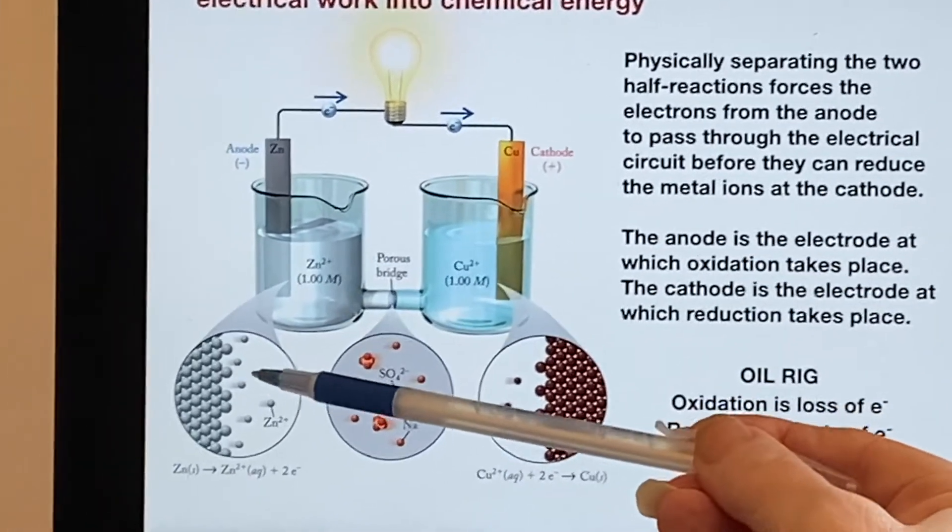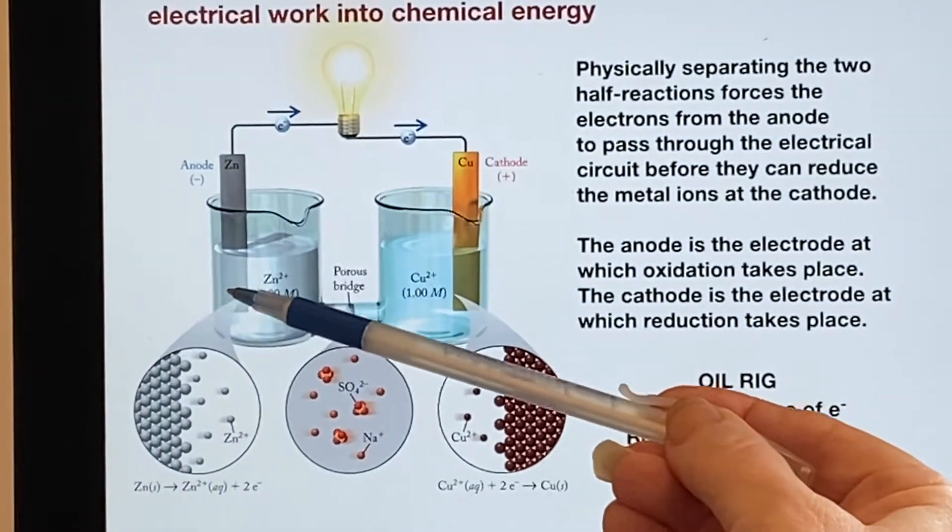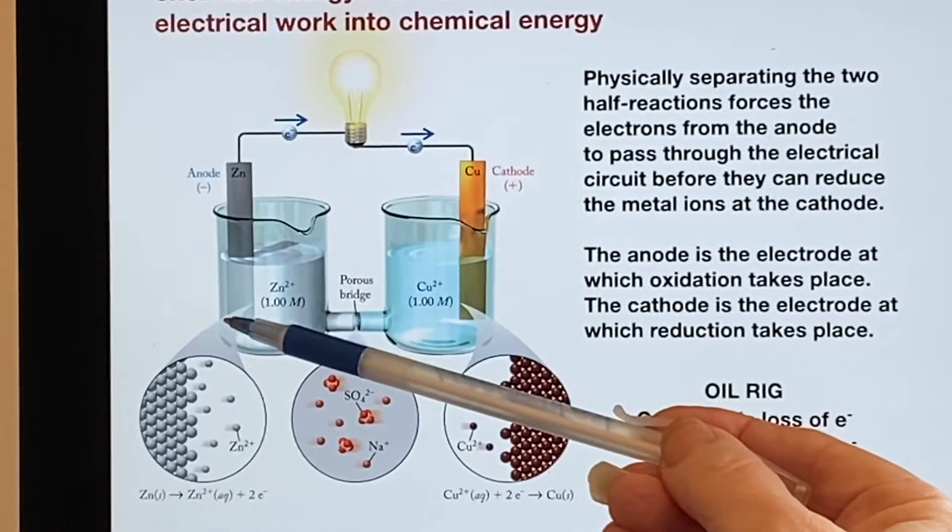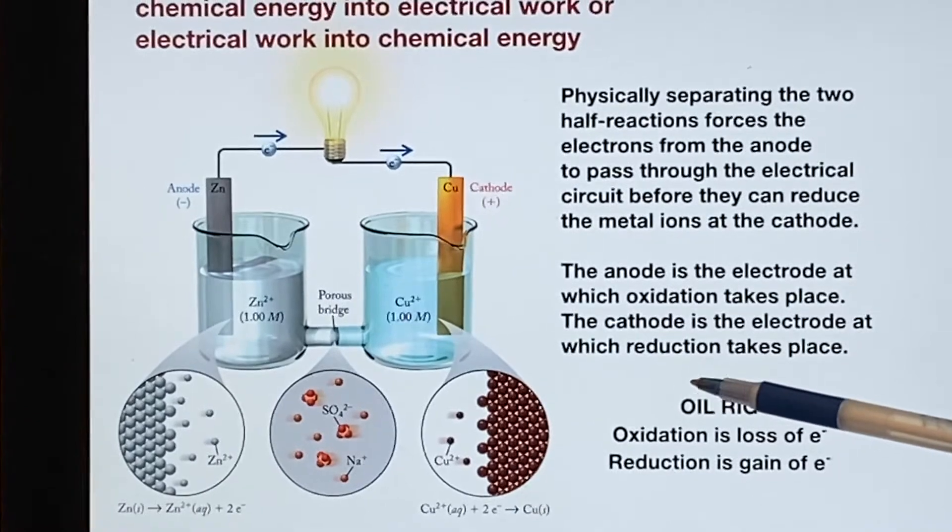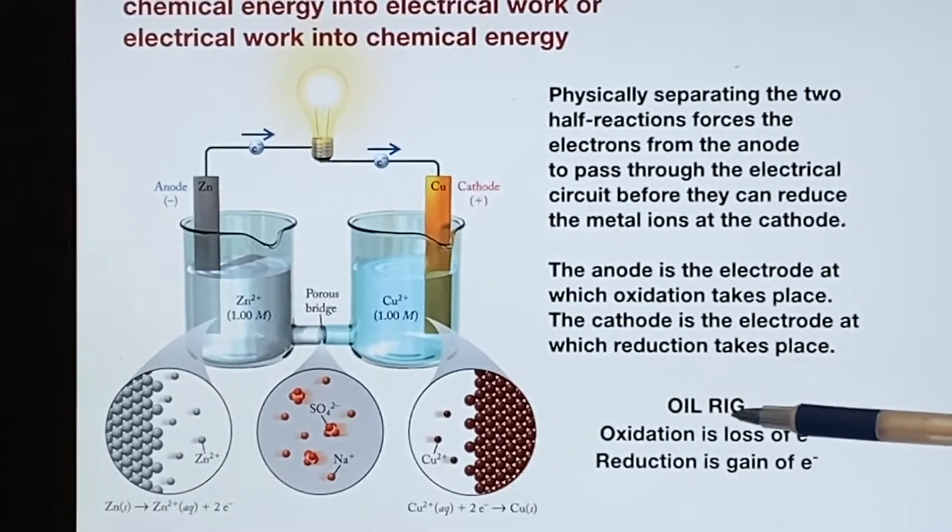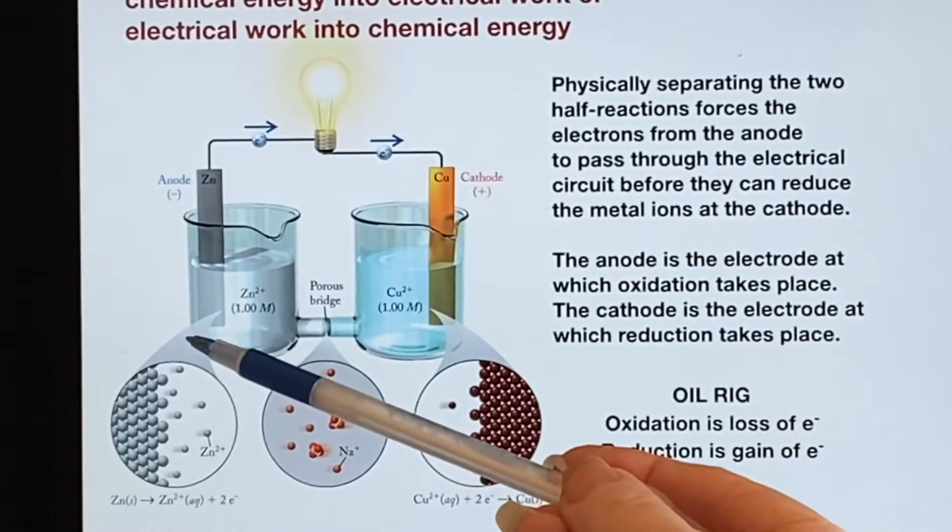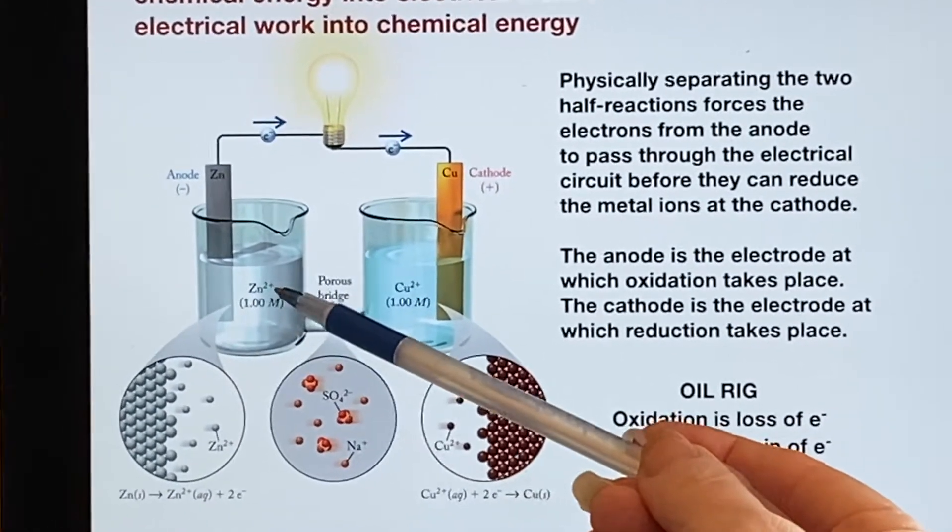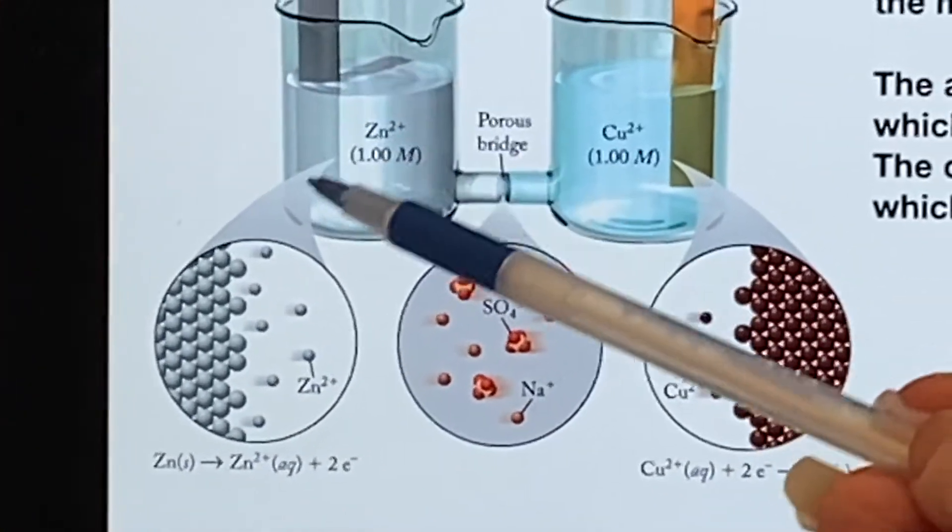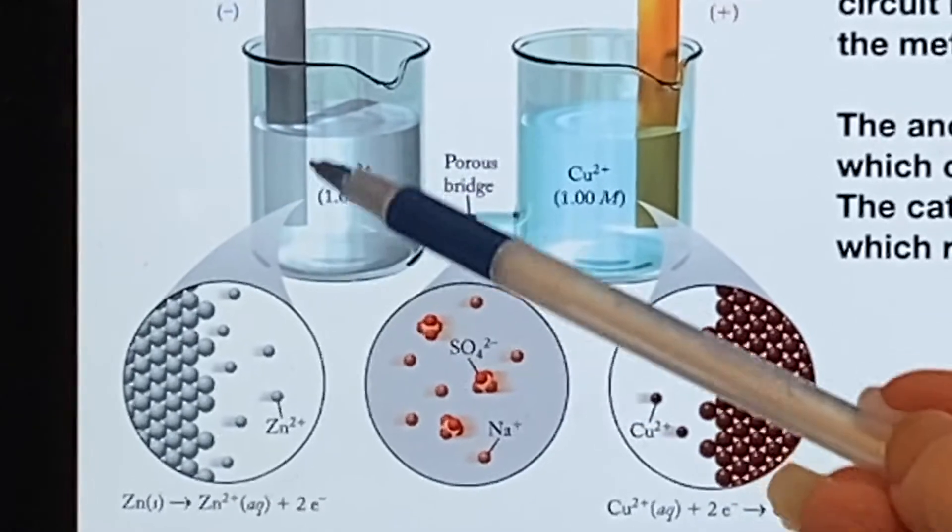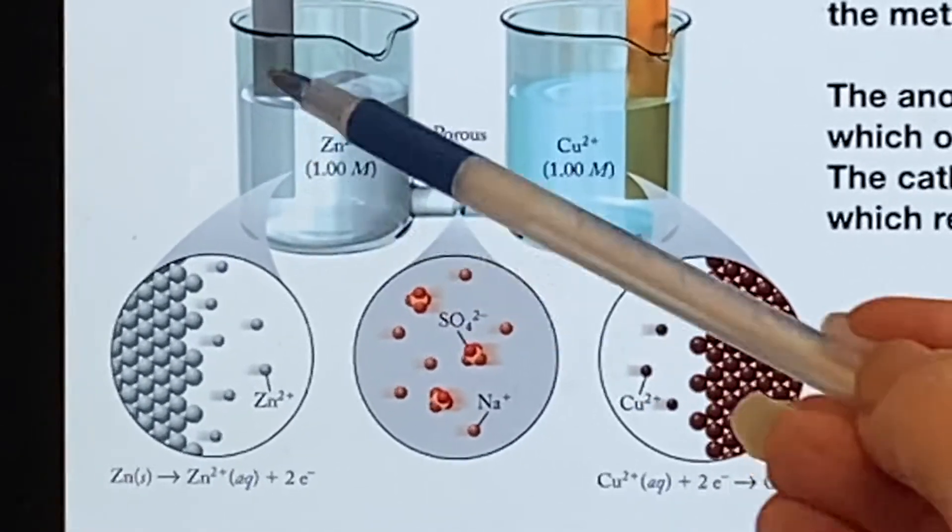We can see here that zinc is acting as the anode. This is where the oxidation takes place. Oxidation is loss of electrons. That's why this thing went up from a zero oxidation state to a plus two oxidation state. And as a result, the zinc is gradually coming off of this and entering into the solution. This will be eroded away.